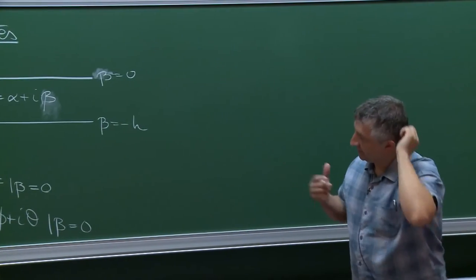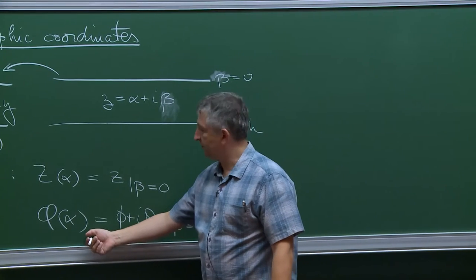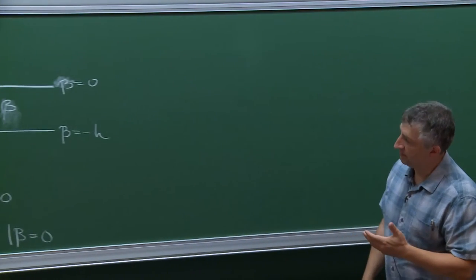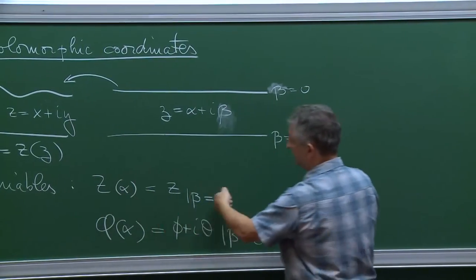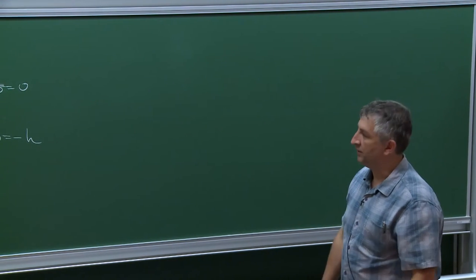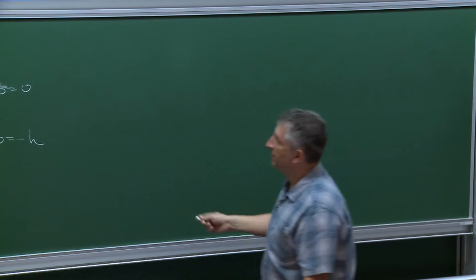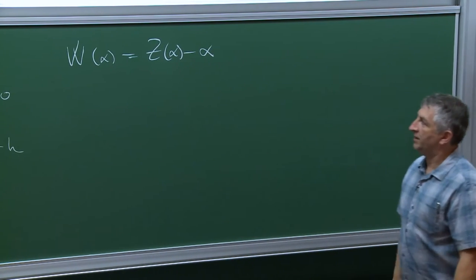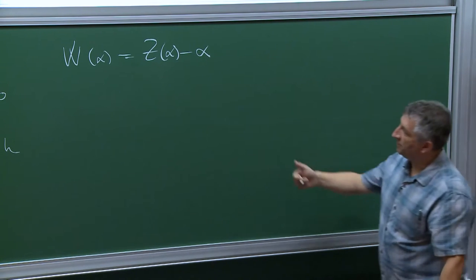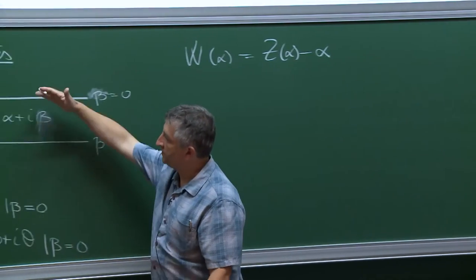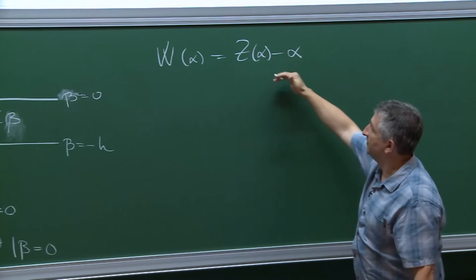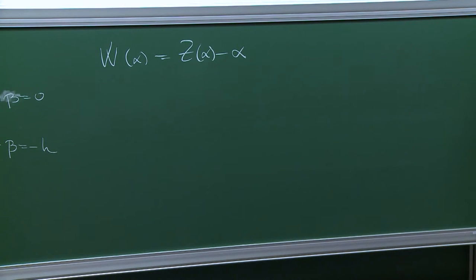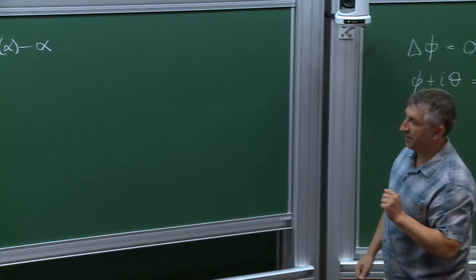Because infinity is mapped to infinity, it is convenient to replace z by a different variable: w of alpha equals z of alpha minus alpha. Assuming w is bounded removes scaling from the degrees of freedom, because if you rescale z without rescaling alpha, w is no longer bounded. You're still left with horizontal translations, which correspond to constants and are easier to handle in this theory.